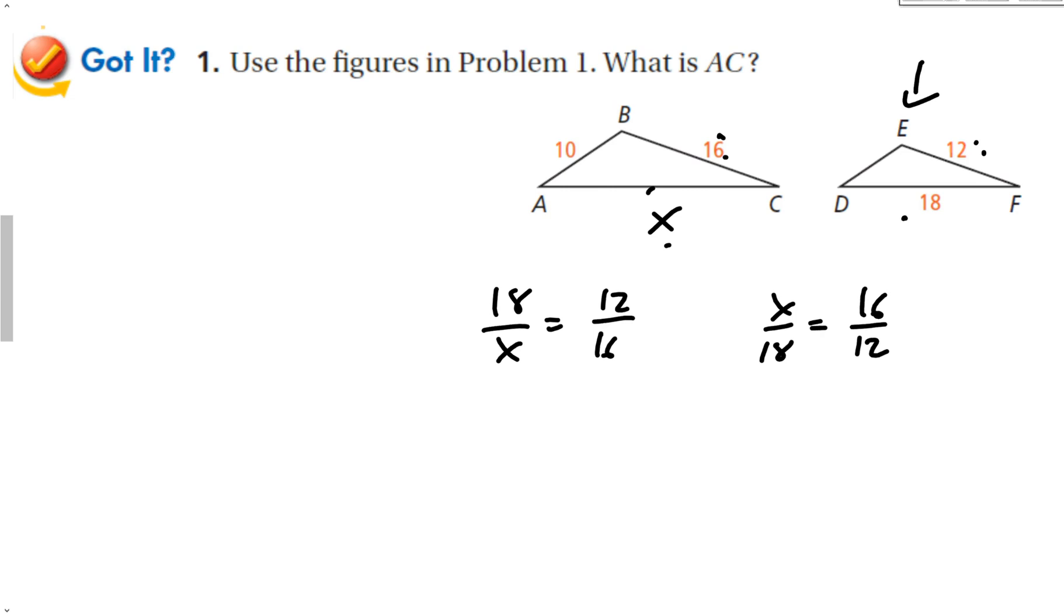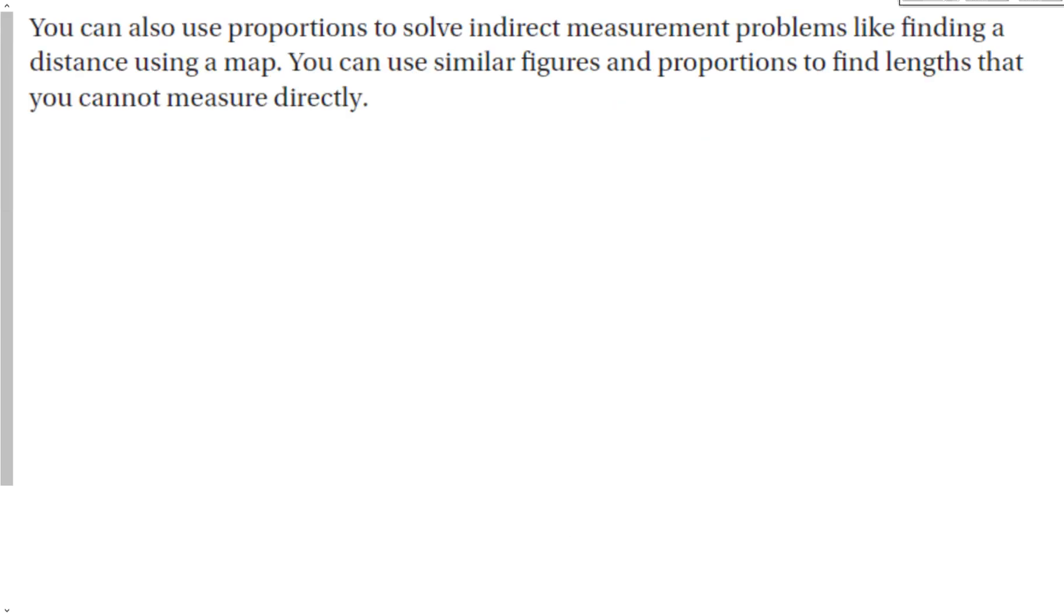Cross multiply. We have 18 times 16, that gives me 288 equals 12X. Divide both sides by 12, and we're left with 24. So X equals 24. Now you should always make sure your answer makes sense. This happens to be the biggest side, it is the biggest number, and it is bigger than this one because this triangle is bigger than that one. So everything makes sense.